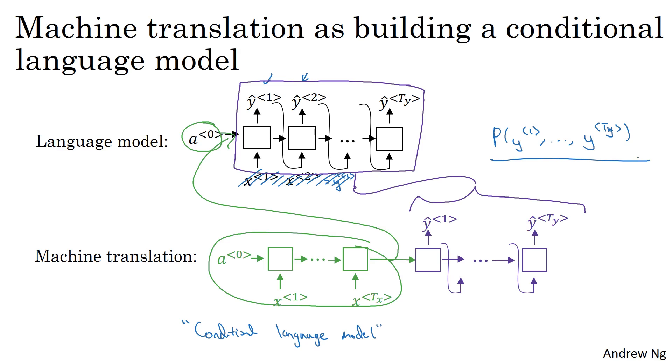So that's why I call this a conditional language model. And instead of modeling the probability of any sentence, it is now modeling the probability of, say, the output English translation, conditioned on some input French sentence. So in other words, you're trying to estimate the probability of an English translation,